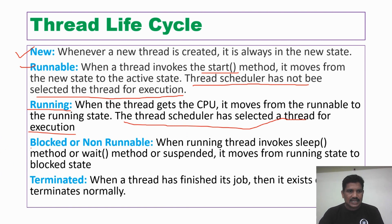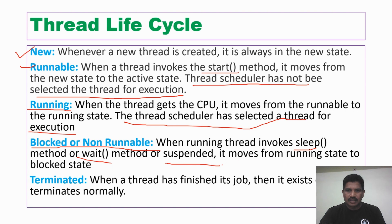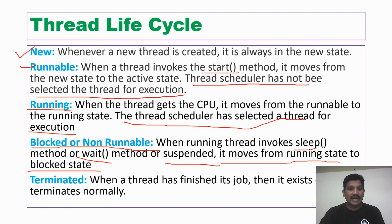When a thread switches from running state to the blocked state: when the current running thread invokes the sleep method, or requires any I/O operations, or invokes the wait method, or is suspended, or requires any lock — the thread moves from running state to the blocked state, which is also called the non-runnable state.